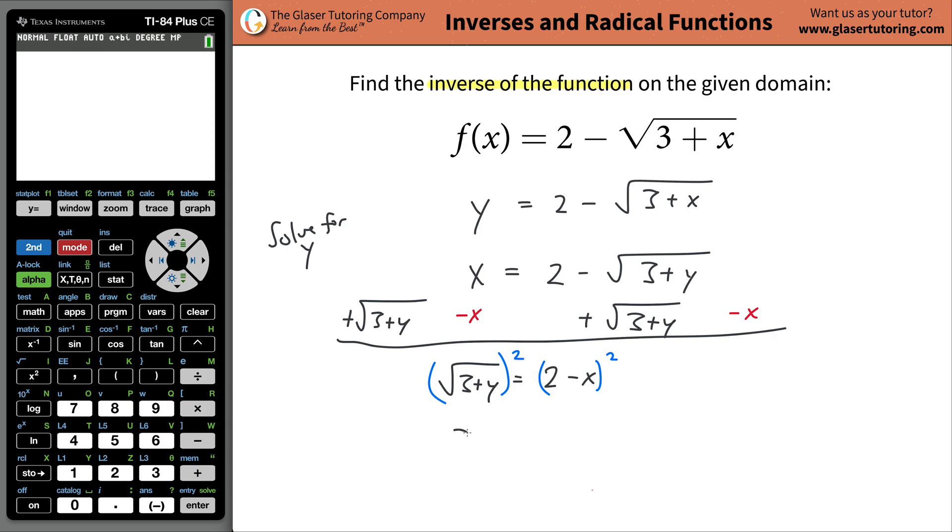Now this is going to be three plus y, and that's going to equal, you can write the x first if you want, but I'm going to leave it as two minus x. And that's just going to be squared. You don't have to kind of foil that out. Just leave it alone.